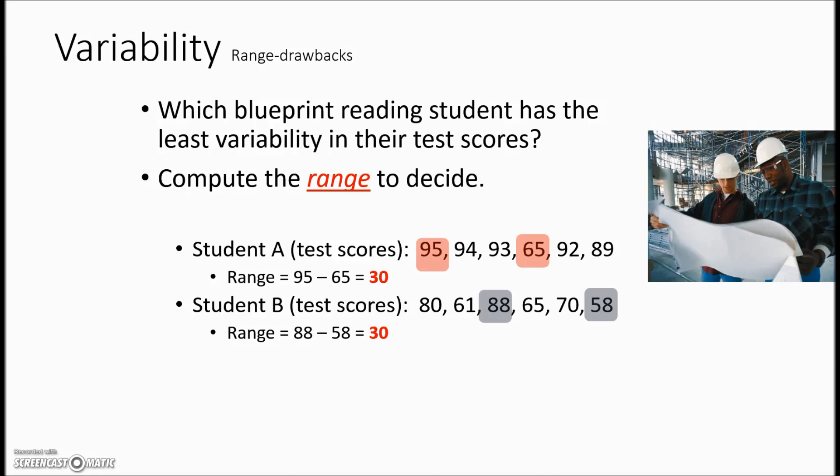Seems like initially that these two students have the same consistency. However, if you look at the values of student A, all of them are in the 90's with the exception of this one score. This would be considered an outlier not consistent with the rest of them. So using the range as a measure of variability would be a little misleading and perhaps there's a better method that we can use. If we take that outlier out, we now have a range of six and we would definitively say student A is more consistent or has the least variability in their test scores.